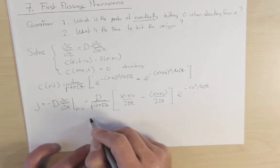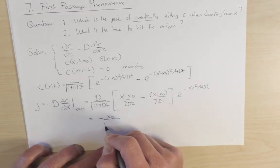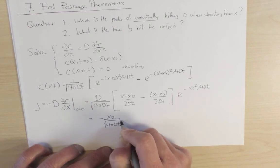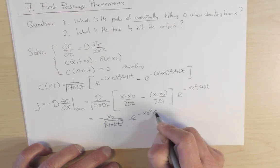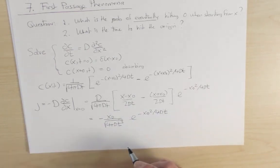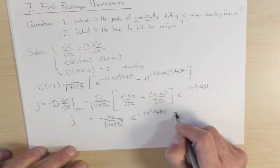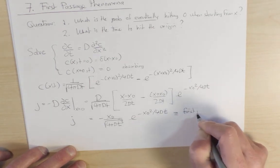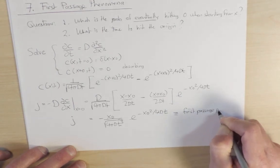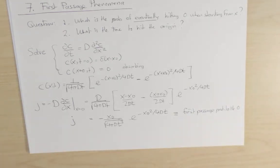Gathering all terms, then we have minus x naught divided by square root of 4πDt³, because the t conspires with the t over here, e to the minus x naught² over 4Dt. So this is the flux to the origin. This I can also think of as the first passage probability, first passage probability to the origin. That is, it's the probability that a random walker or a diffusing particle comes to the origin for the very first time at time t.